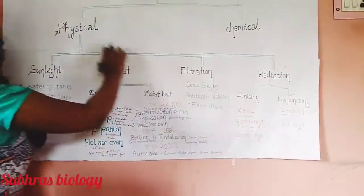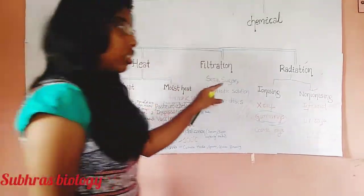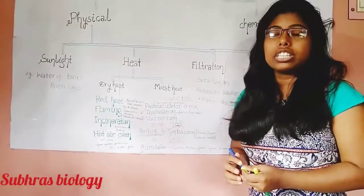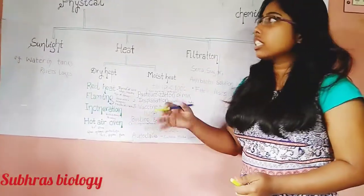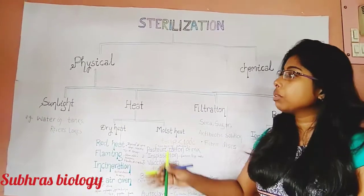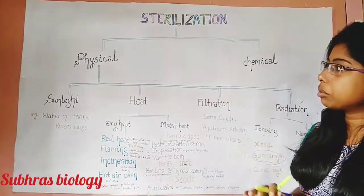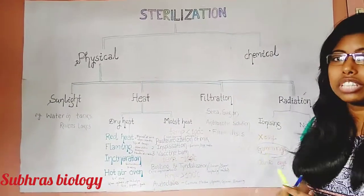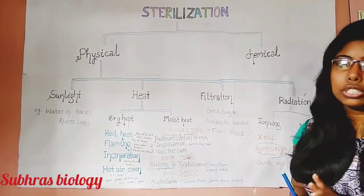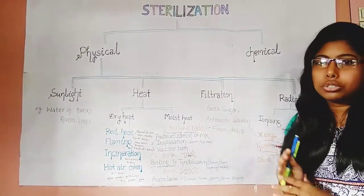This covers the total physical type of sterilization: sunlight, heat, filtration, and radiation. In the next class we will cover the chemical type of sterilization, and in a final short video of 3 to 4 minutes I will show you shortcuts to remember all examples of physical and chemical sterilization.